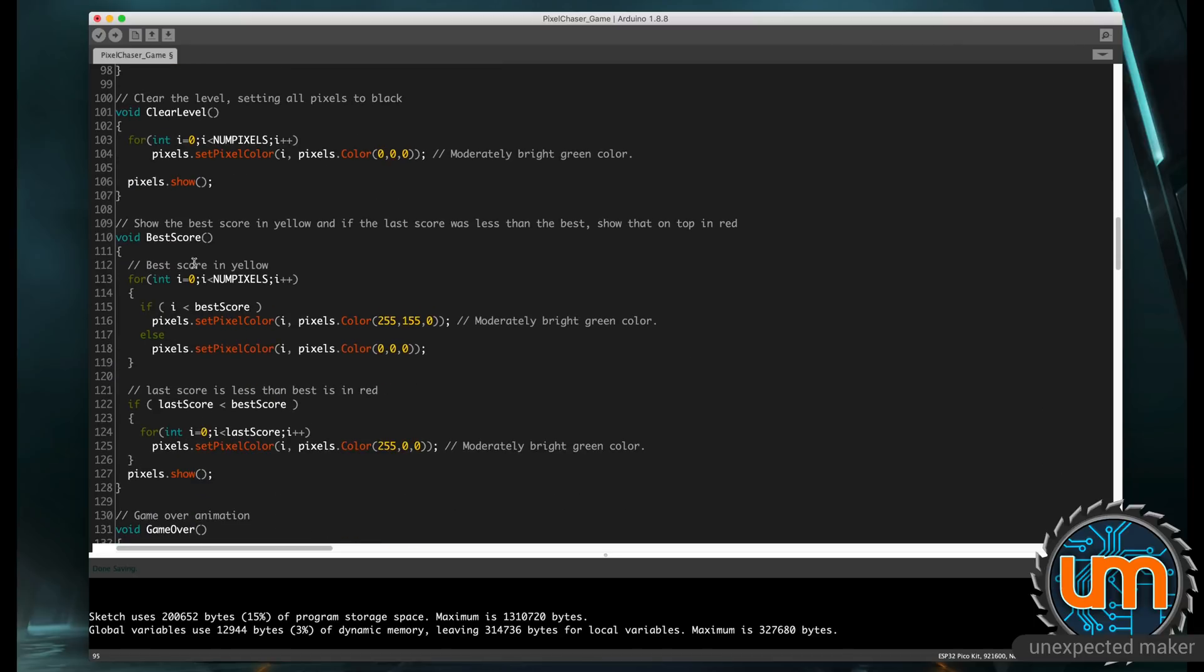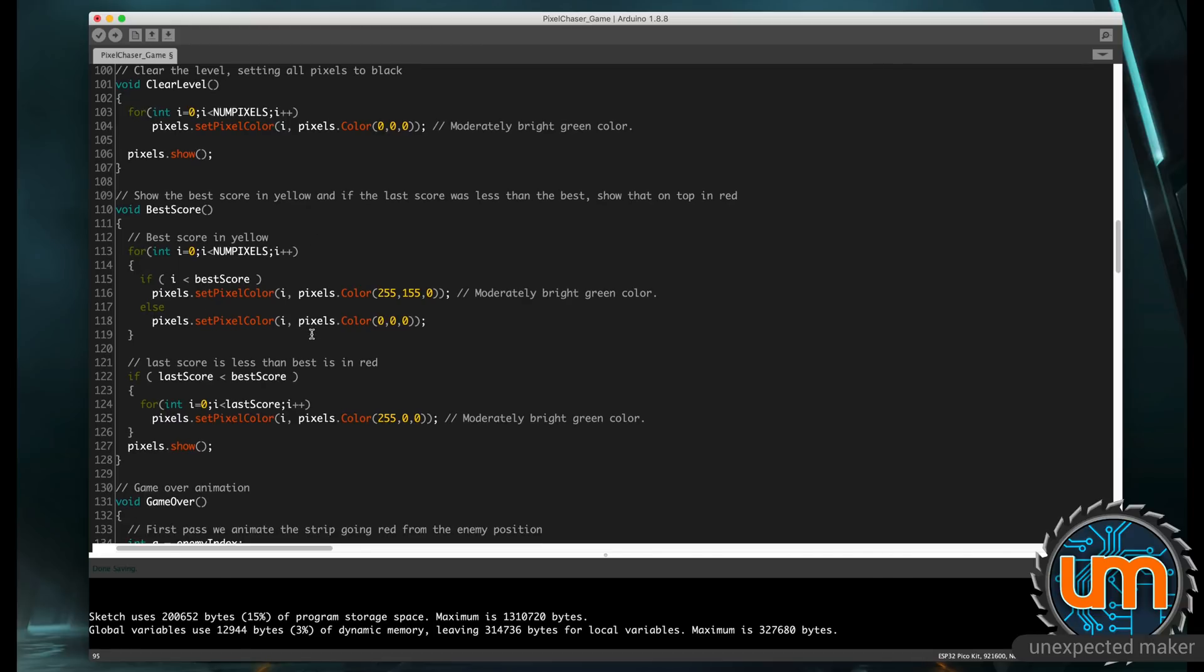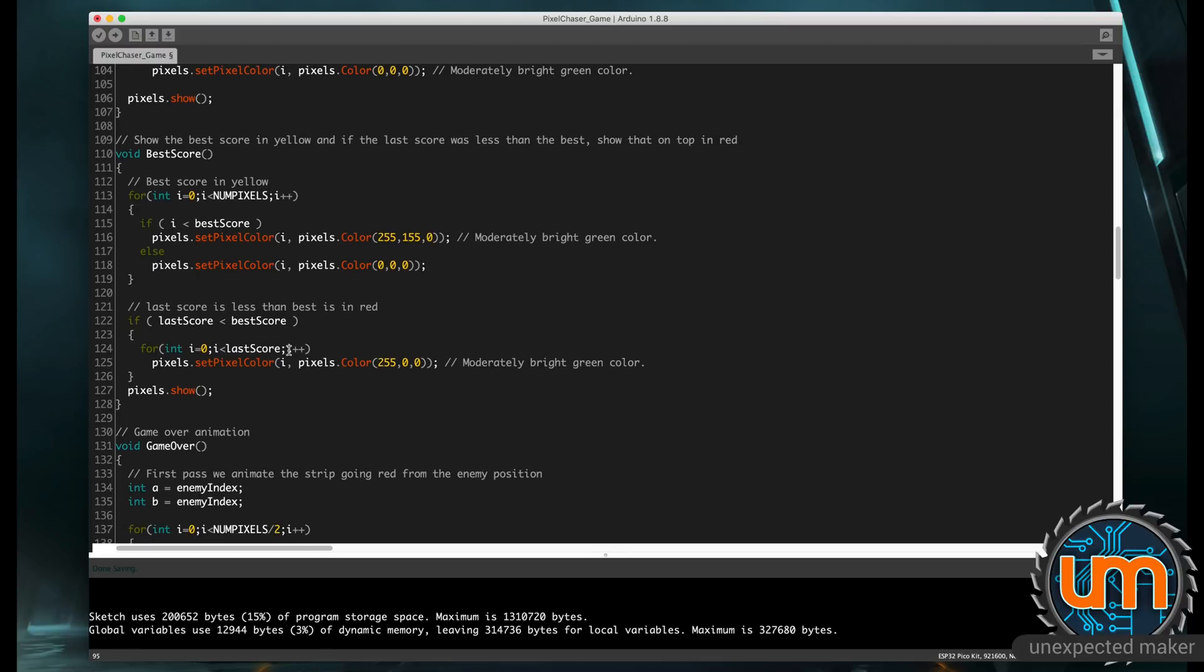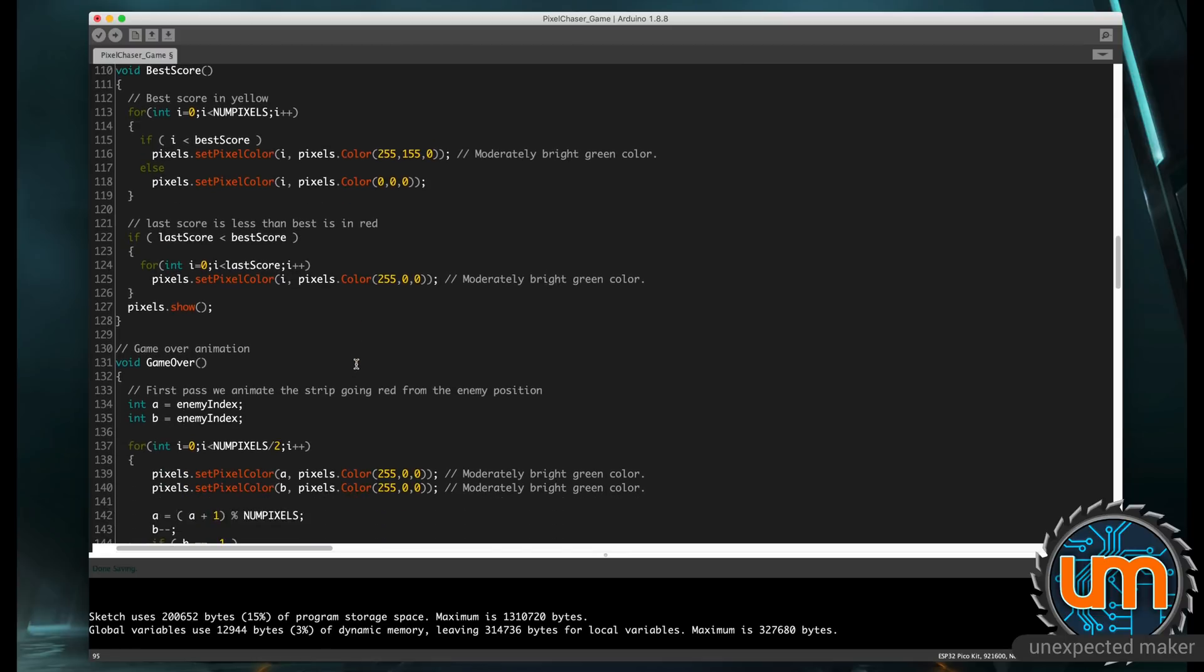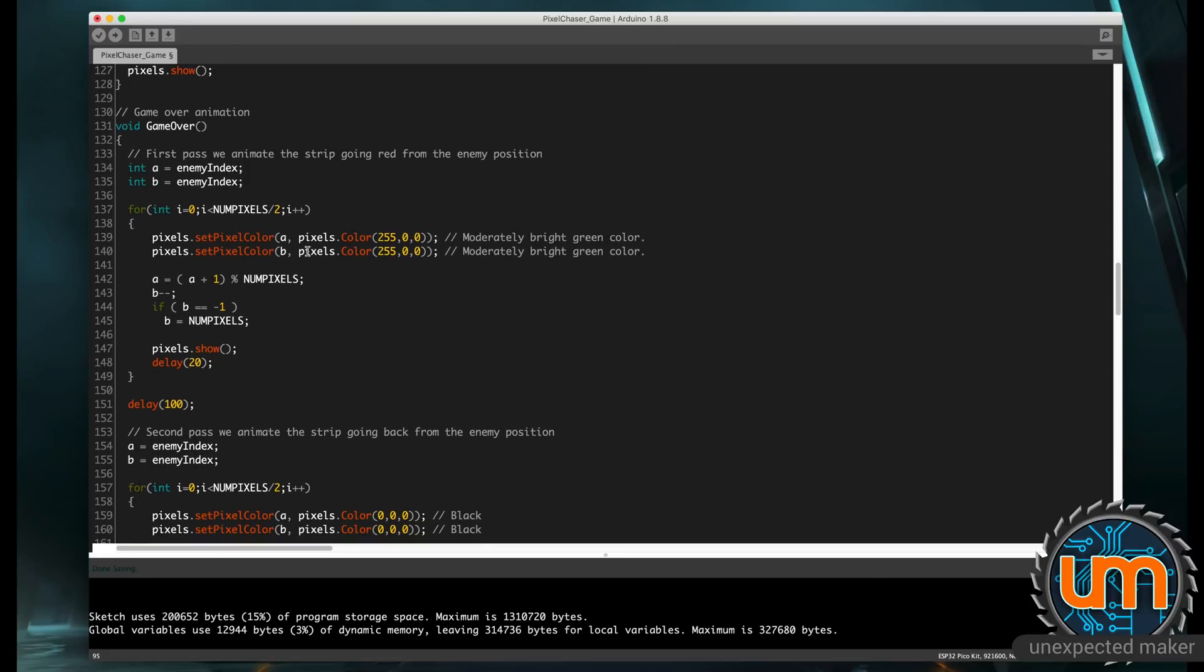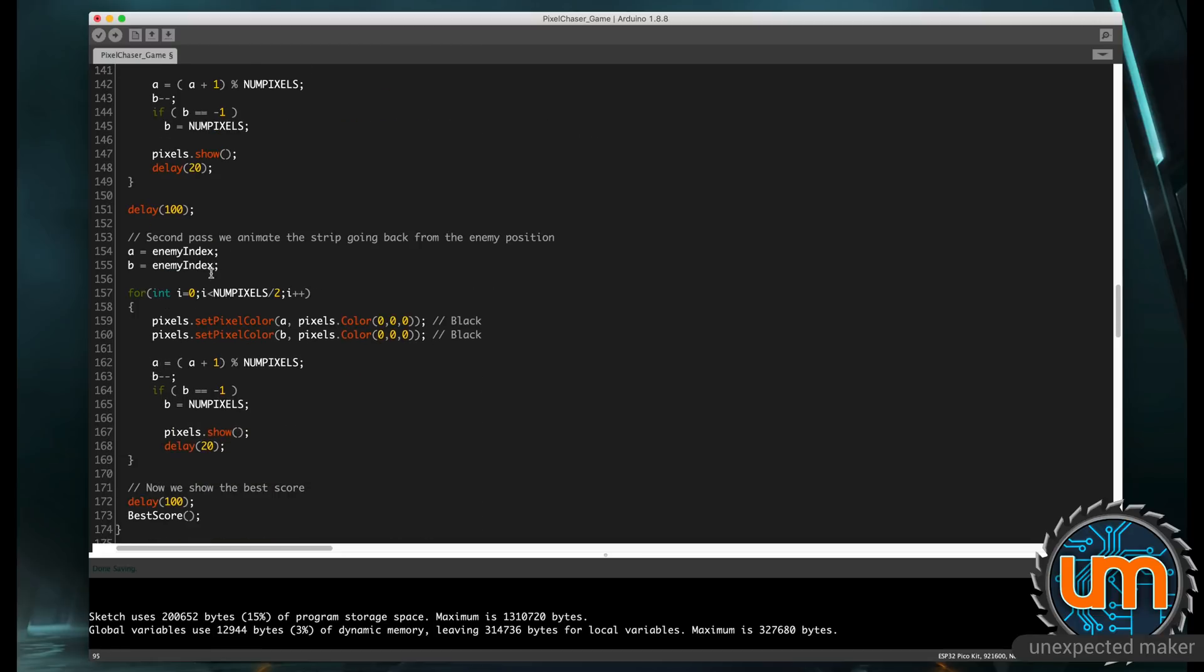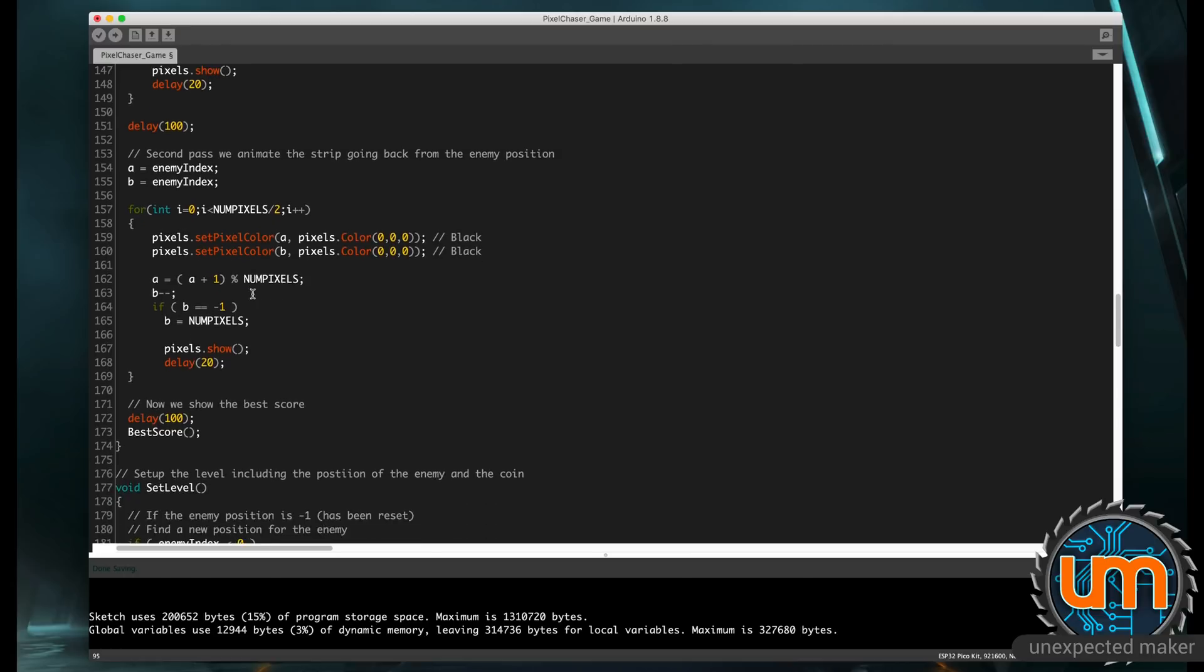There's a clear level, which sets everything to black. The best score method goes through and does a yellow animation for the current score, and then if your last score was less than the best score, it shows it in red as well. The game over state basically does two animations. From the point where the enemy was, it animates out two circular rings, and then it waits half a second, and then it animates black rings to clear them, and then it shows the best score.